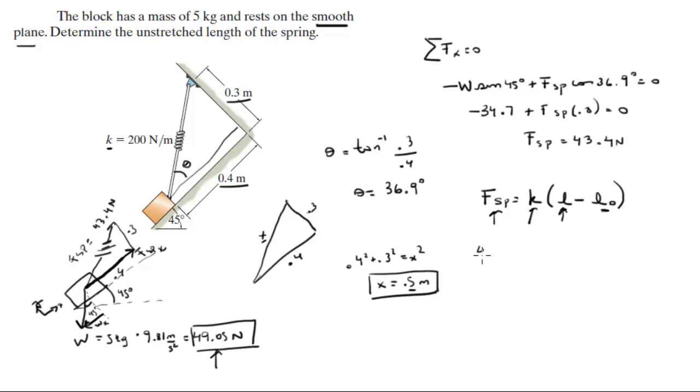Force of the spring is 43.4. The constant is 200. The stretched length is 0.5 meters. And the unstretched length is what we're trying to find. So when you solve for the unstretched length, you're going to get that it is equal to 0.283 meters. Final answer.